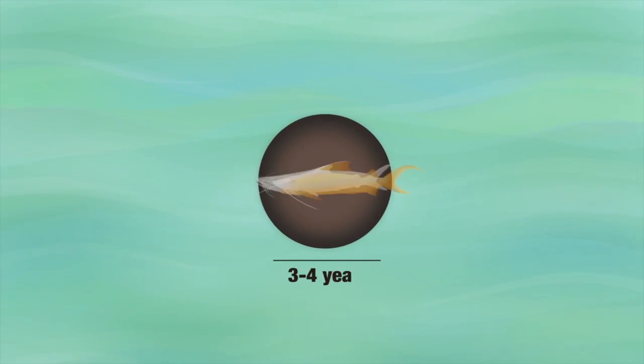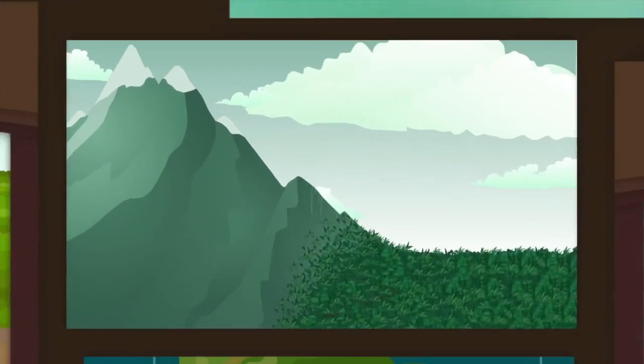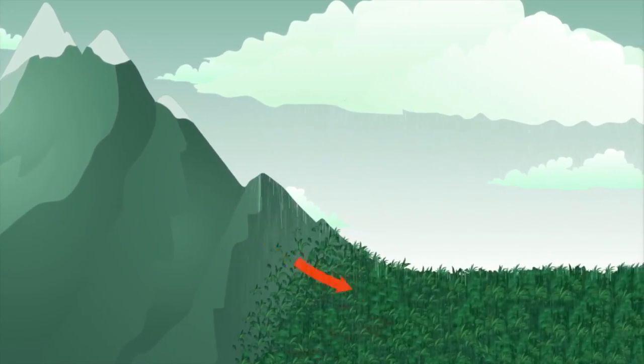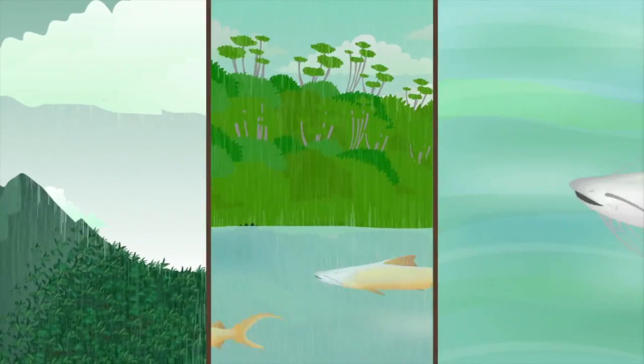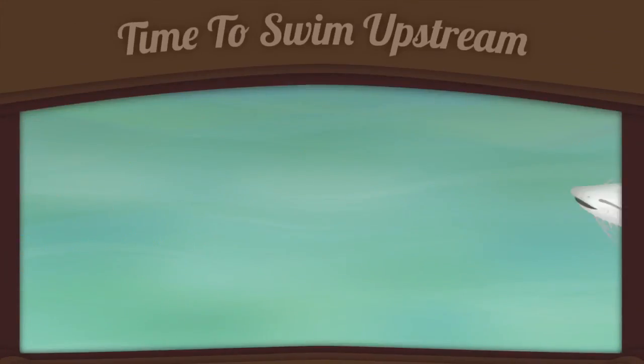When it reaches three or four years old, the Dorada measures between three to four feet long and it's ready to breed. At the onset of the rains in the western Amazon, our traveler fish feels the changes in the water level and knows it's time to start its journey towards the basin's headwaters to spawn.